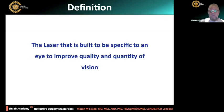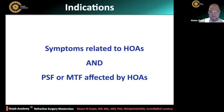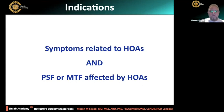So it is the laser that is built to be specific to an eye to improve quality and quantity of vision. The aim of it is to improve the quality more than the quantity of vision. The indications are that there must be symptoms related to higher-order aberrations, and there is an objective clue, like affection of the PSF or the MTF.